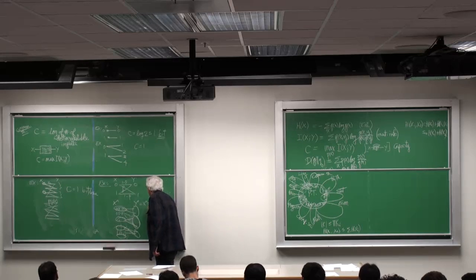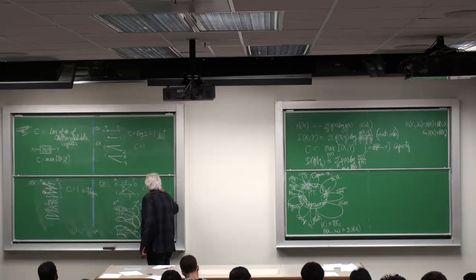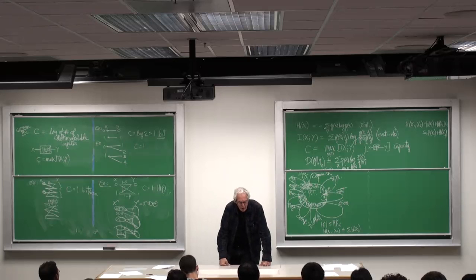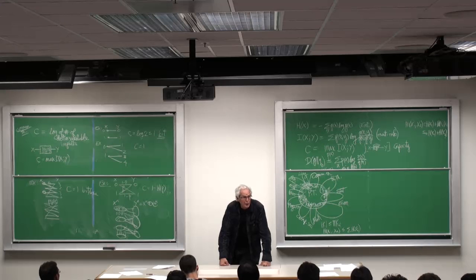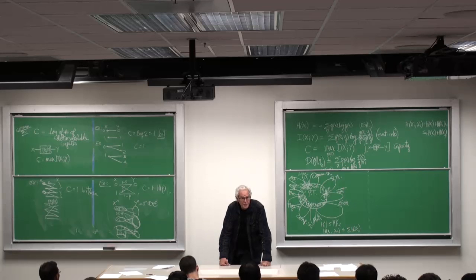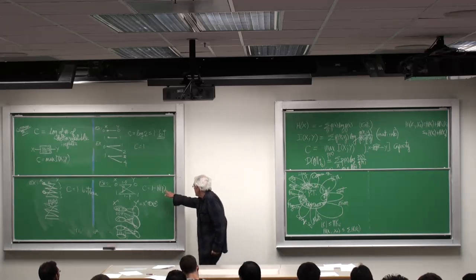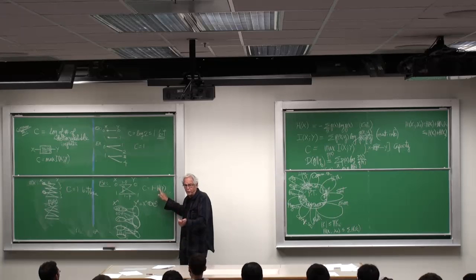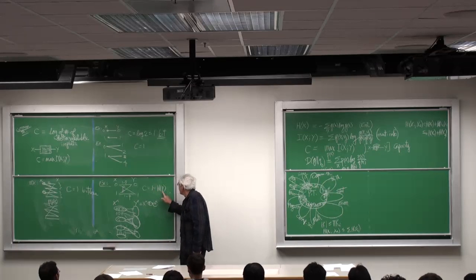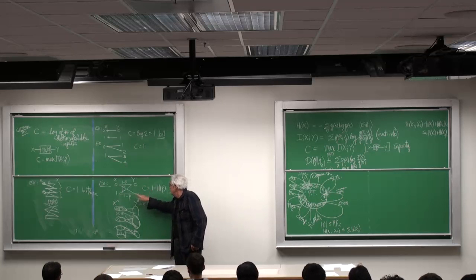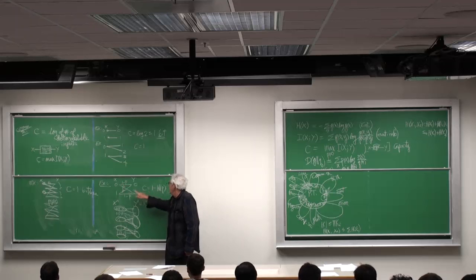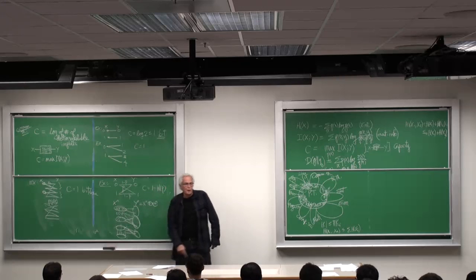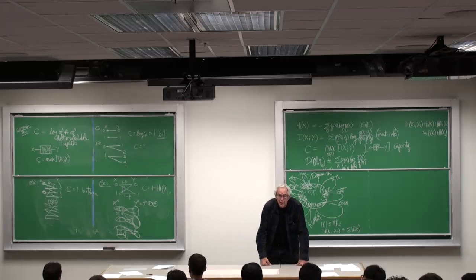The answer turns out to be C equals 1 minus H of P, where P is the distribution that is 1 with probability P and 0 with probability 1 minus P. So this is the entropy of the error, or the coin flip that will cause the error. And 1 is the most distinguishable which you can have, 1 minus H of P, and so you get the capacity as a function of your probability of noise in the channel.